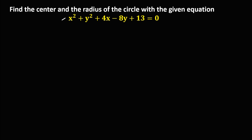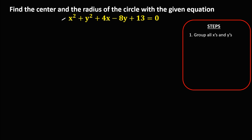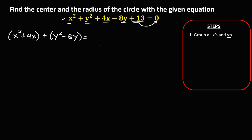In writing this equation to standard form, these are the steps. We have to group all x's and all y's. So from this given, we need to group all x's: x squared plus 4x, then group all y's: y squared minus 8y. Then equals — transpose this constant to the other side, so positive 13 becomes negative 13.